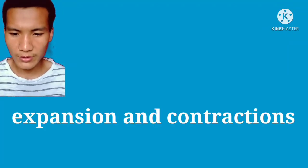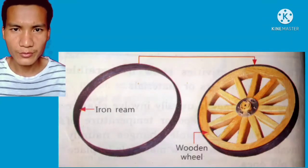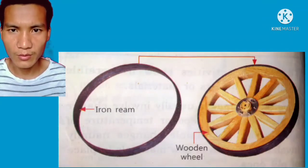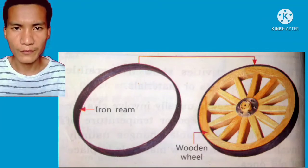Next we have expansion and contraction in solids. Expansion means becoming bigger in size and contraction means becoming smaller in size. With an example, we'll talk about a wooden wheel. To put an iron ring on a wooden wheel, we first put that iron ring in the fire so that it becomes bigger in size.